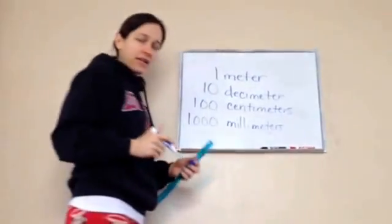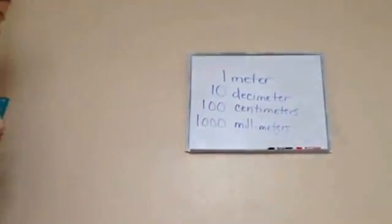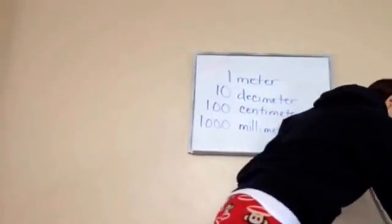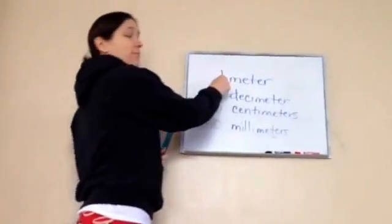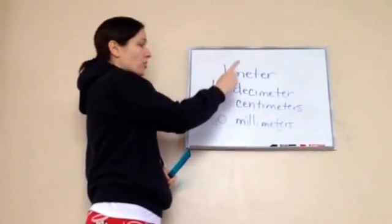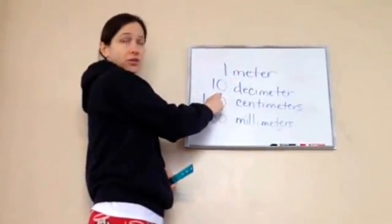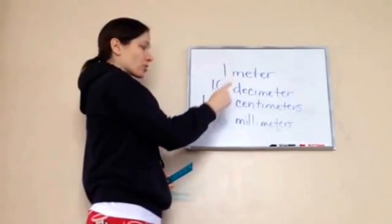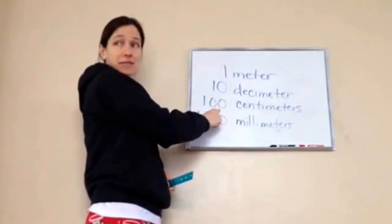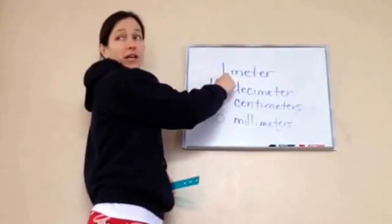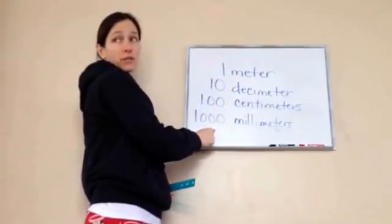Okay, now that you've got that written down on your paper, what I want you to see is that 1 meter equals 10 decimeters, 1 meter equals 100 centimeters, and 1 meter equals 1,000 millimeters.